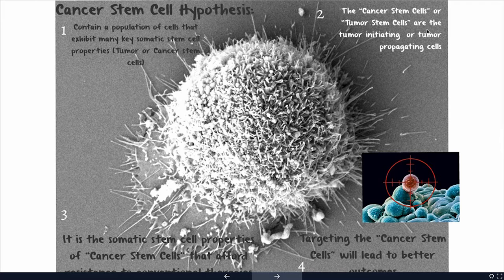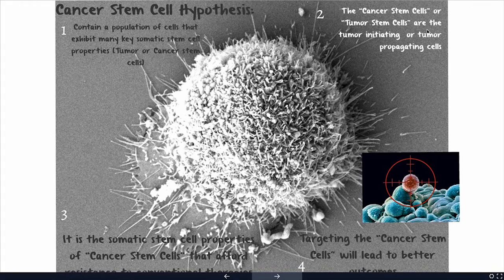So what are cancer stem cells? The cancer stem cell hypothesis started about two decades ago, even though there was earlier data. I still think it's a hypothesis personally. What the cancer stem cell hypothesis proposes is: first, most cancers contain a population of cells exhibiting many key somatic stem cell properties — these are cancer stem cells or tumor stem cells. Second, cancer stem cells initiate tumors and are responsible for long-term tumor propagation. Third, stem cell properties may make cancer stem cells resistant to conventional therapeutics. And fourth, targeting cancer stem cells should yield better outcomes.